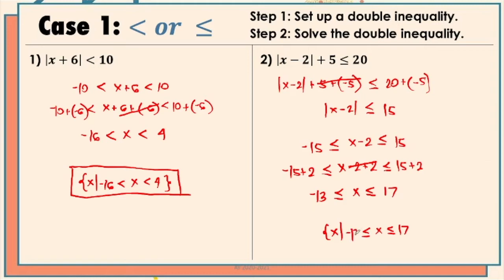This means that the possible values that make the inequality true are all numbers between negative 13 and positive 17, including negative 13 itself and positive 17 itself.